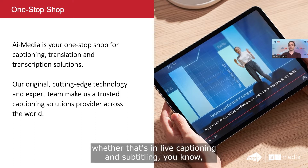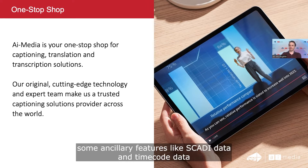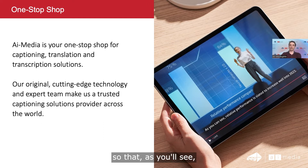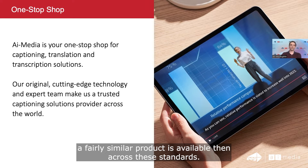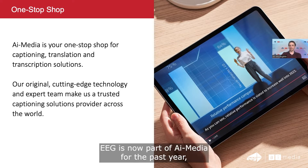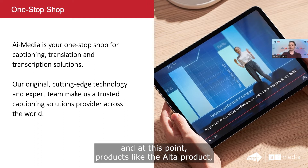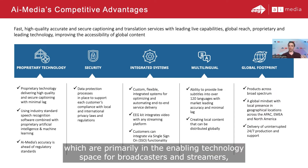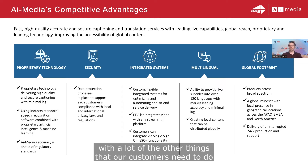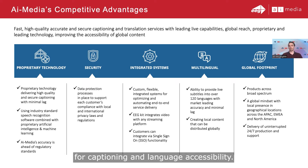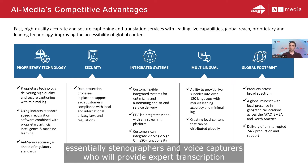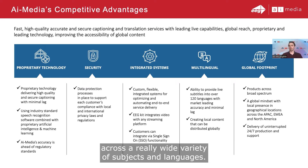You've been able to build out a lot of features — whether that's in live captioning and subtitling, ancillary features like SCUDI data and timecode data — in a variety of IP standards so that a fairly similar product is available across these standards. The product, if you've been following our products and webinars for a long time, was originally developed through EEG. EEG is now part of AI Media for the past year. Products like Alta, which are primarily in the enabling technology space for broadcasters and streamers, are merged under the same roof with a lot of the other things our customers need for captioning and language accessibility.